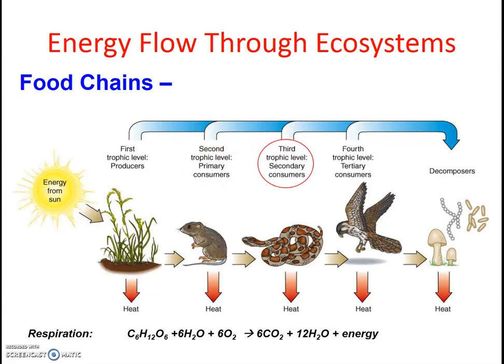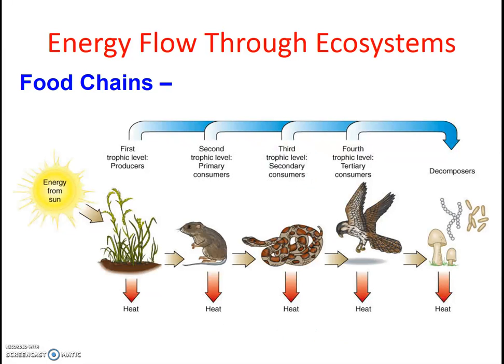The third trophic level is the secondary consumers — predictably, these organisms eat the primary consumers. The fourth trophic level is the tertiary consumers, who eat the secondary consumers, and it continues in this manner. The secondary consumers and beyond are all carnivores.